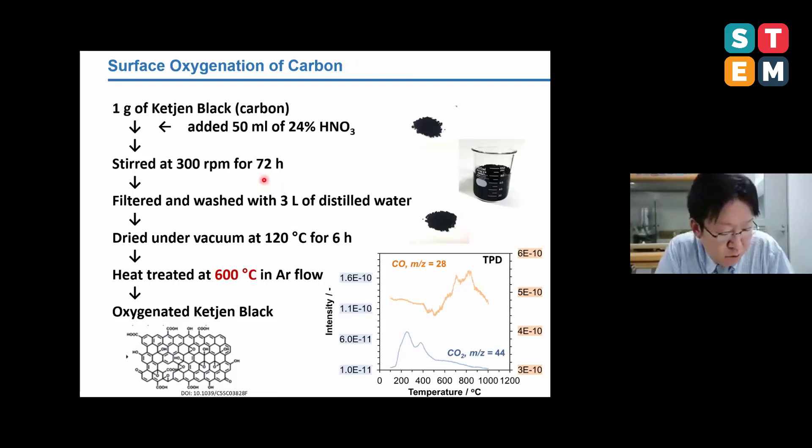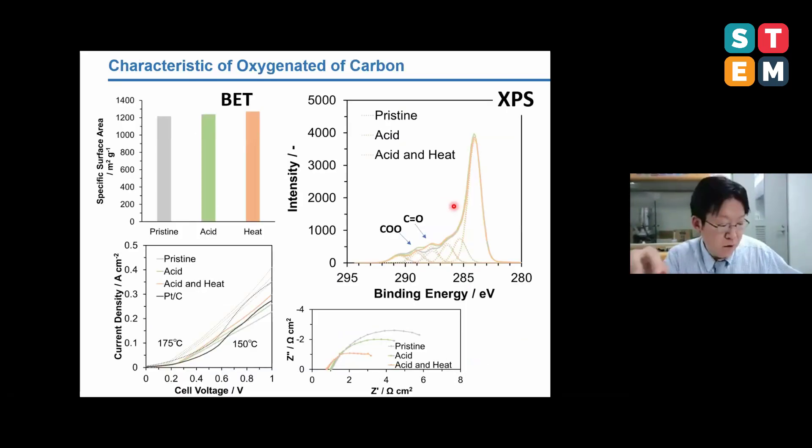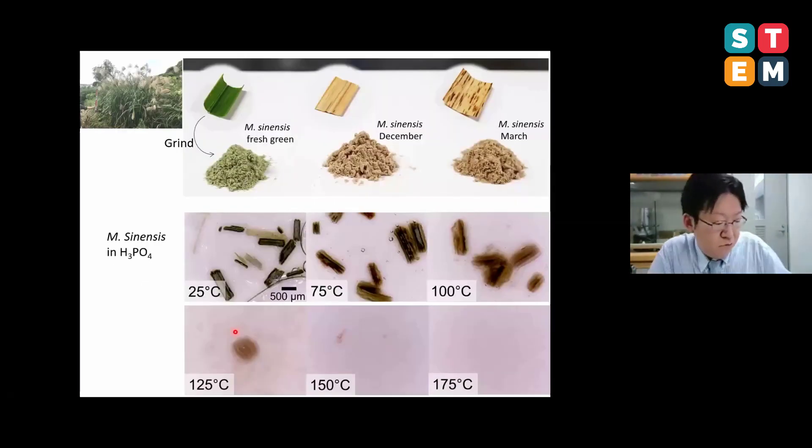So next, in order to improve the electrochemical performance of the carbon electrode, the surface of the carbon was modified by immersing the carbon powders into nitric acid. The oxidation of the carbon surface was confirmed by XPS data, but the surface area was not affected at all. By this acid treatment, the IV performance was improved as shown in this figure. So we can demonstrate the concept of cellulose electrolysis.